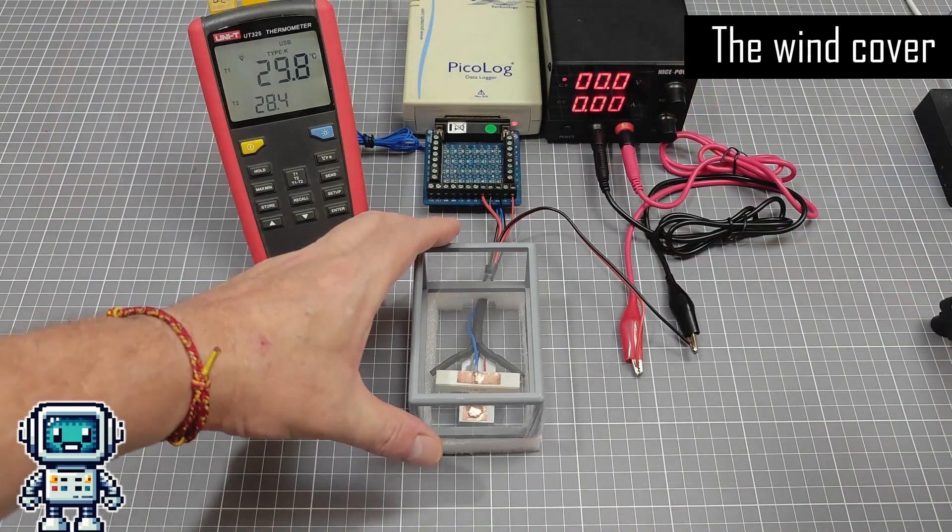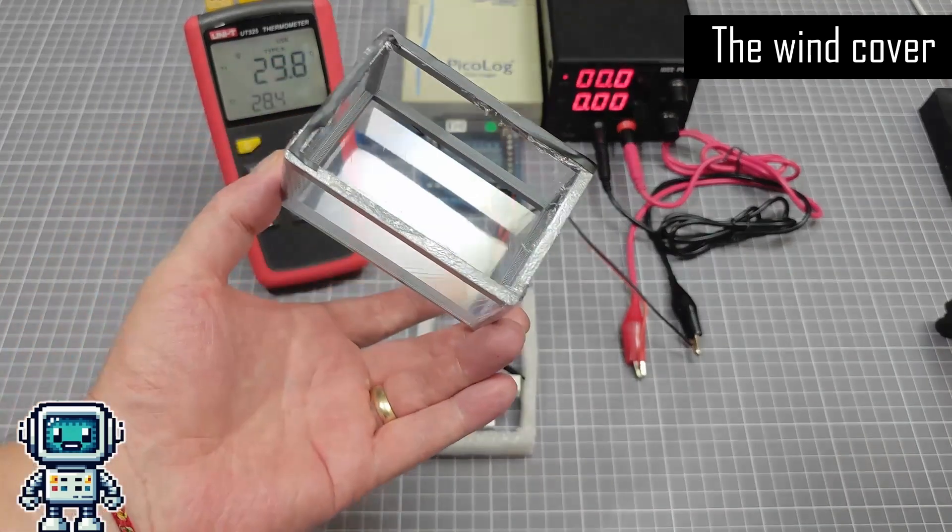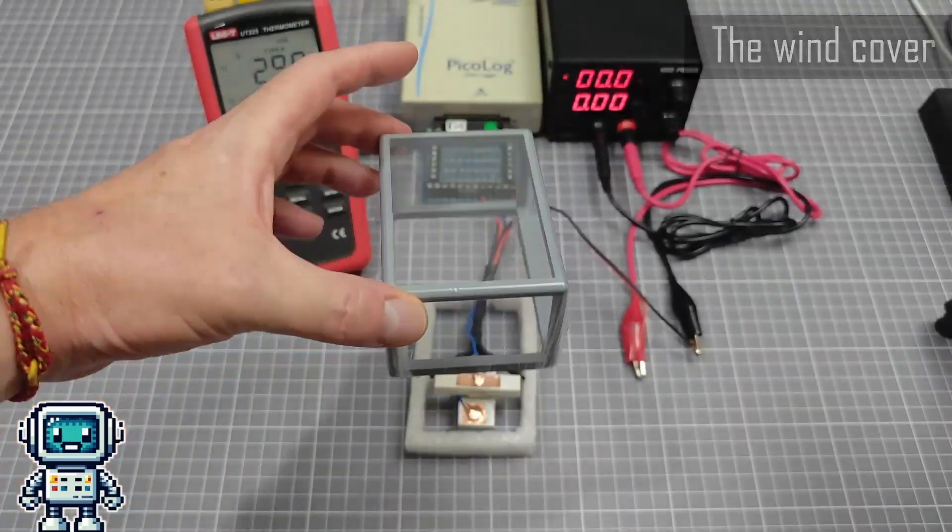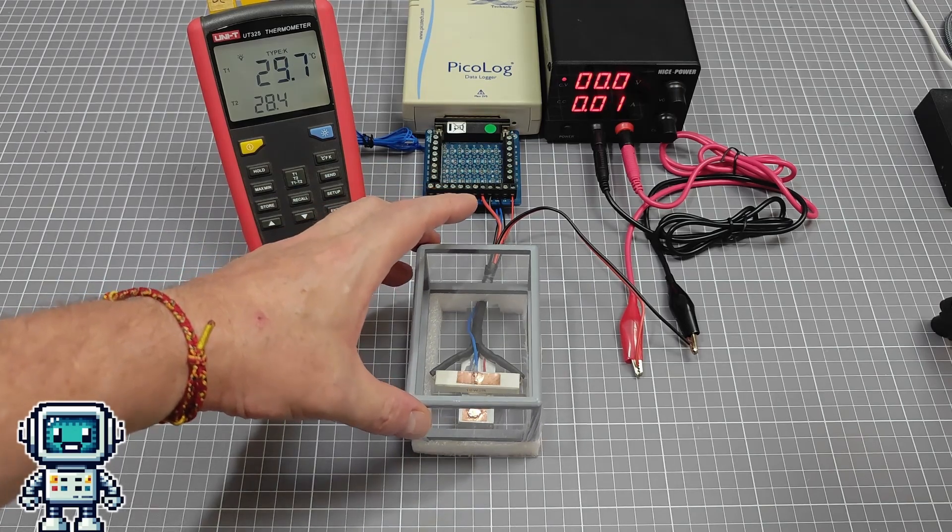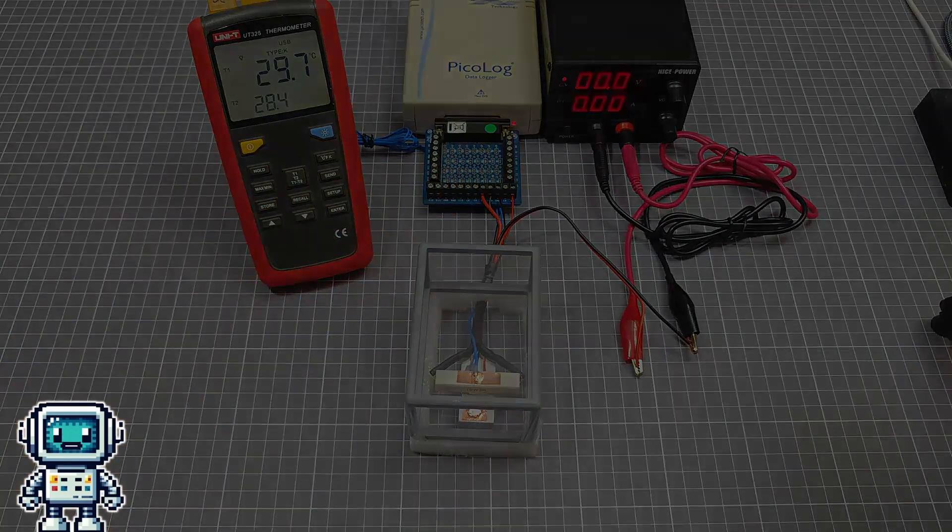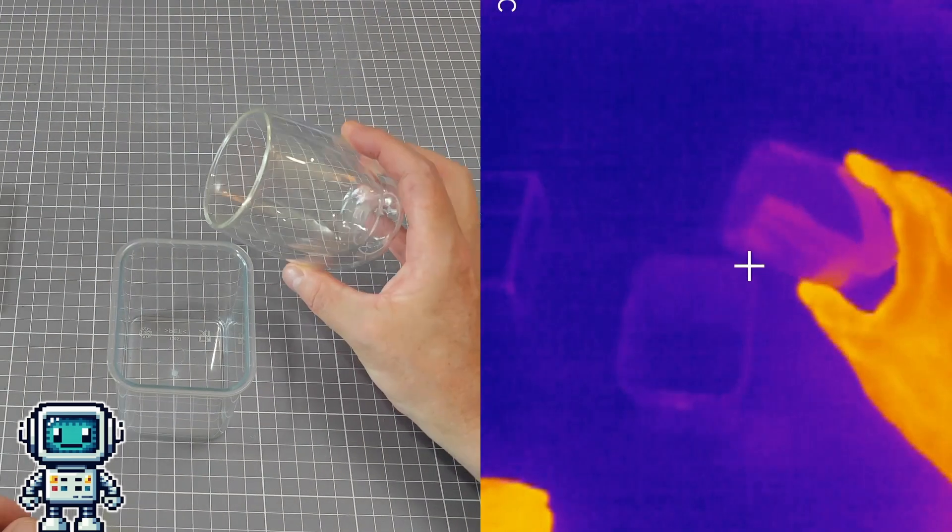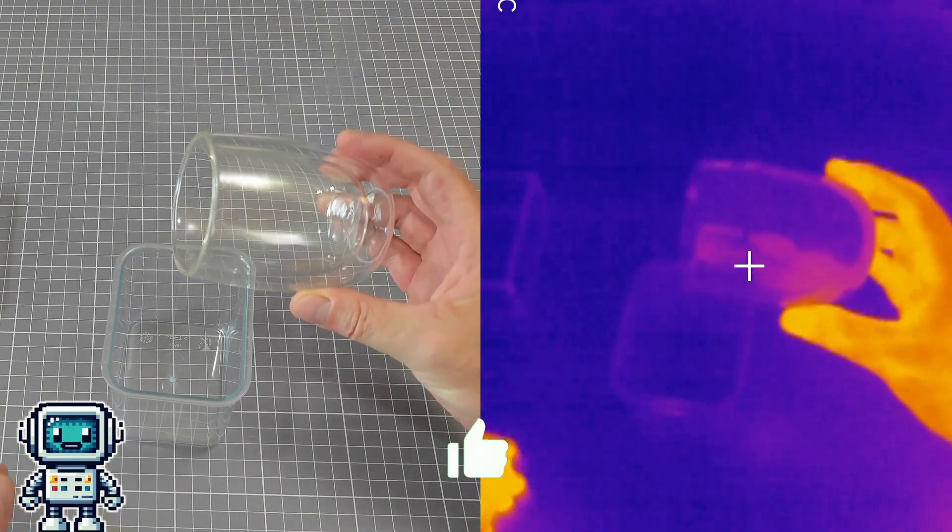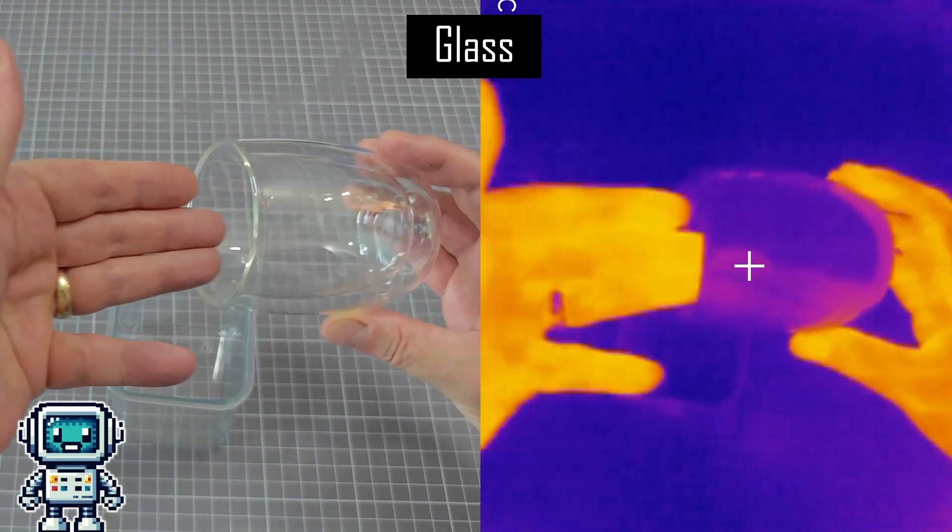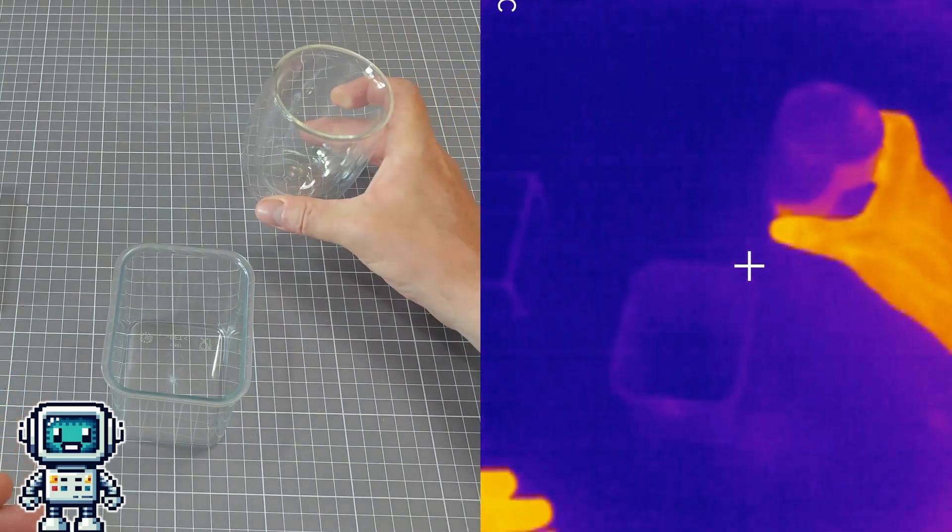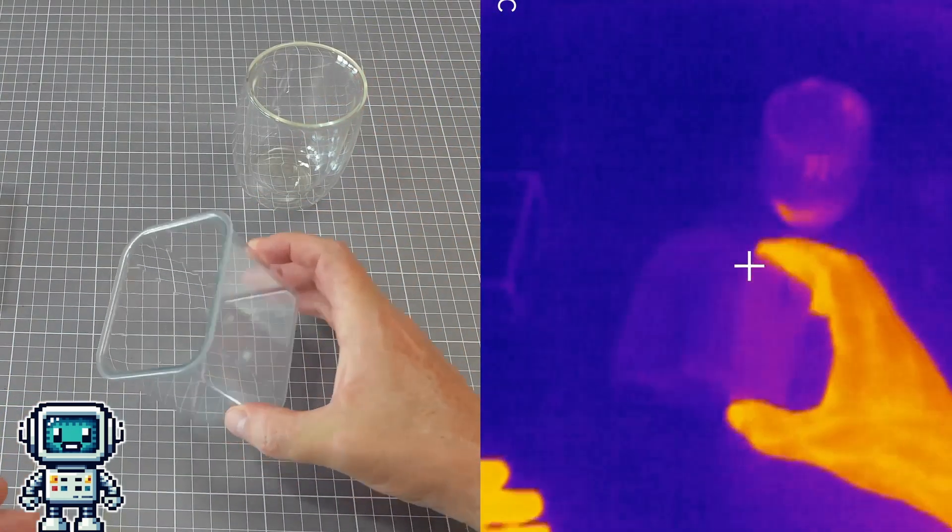We wanted to be able to view the experiment in progress using a thermal camera, so the wind cover needed to be transparent to thermal photons. For this we used polythene food wrapping film. This overly elaborate cover was constructed because we were not able to just use a glass or polycarbonate enclosure. Those kinds of materials are totally opaque to thermal infrared radiation.